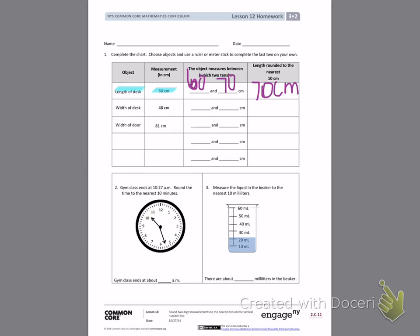My next object is a width of a desk, and in this case, it is 48 centimeters wide. Again, I am thinking of my vertical number line, what is going to go at the bottom of my number line, and what is going to go at the top of my number line. If I am drawing my number line, 48 fits between 40 and 50. 48 is past the halfway number, so I am going to round 48 to 50 centimeters.